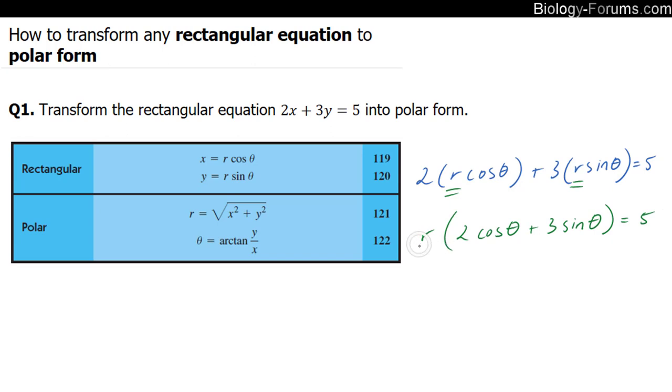And to solve for r, you would divide both sides by this, where you end up with r equals 5 over 2 cosine theta plus 3 sine theta. There you have it. We have successfully transformed this rectangular equation into polar form.